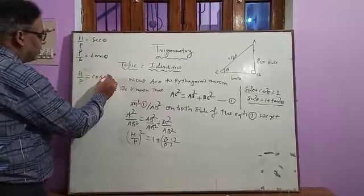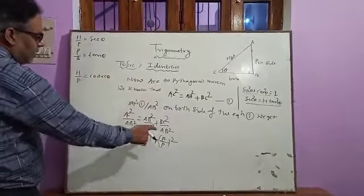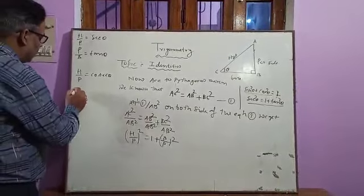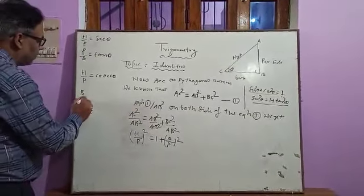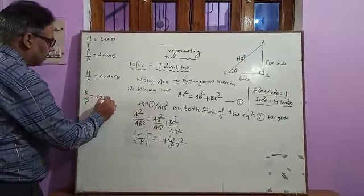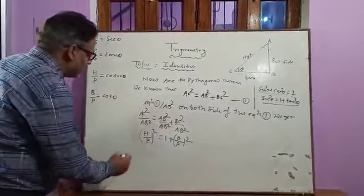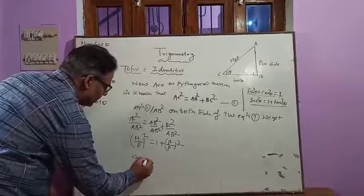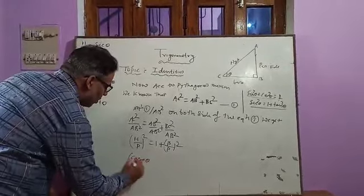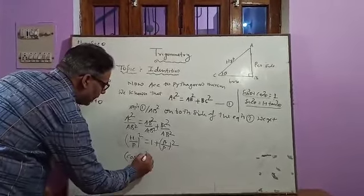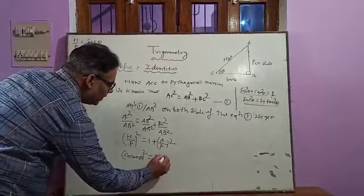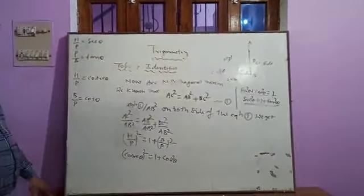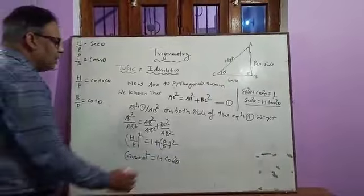Similarly, perpendicular upon base is tan θ, and base upon perpendicular is cot θ. Substituting these values, we get cosec²θ = 1 + cot²θ. This is the third trigonometric identity.